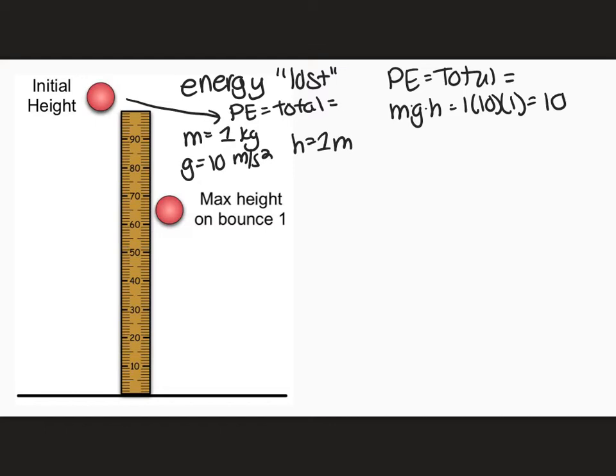This is exactly the same as last problem. So I have a total energy of 10 joules. So remember, this is the energy that has to stay constant the whole time. So as this ball drops, it's going to drop to the bottom, and all that potential energy is transformed into kinetic energy. But when this ball bounces up to the top, it doesn't bounce all the way up to 1 meter.